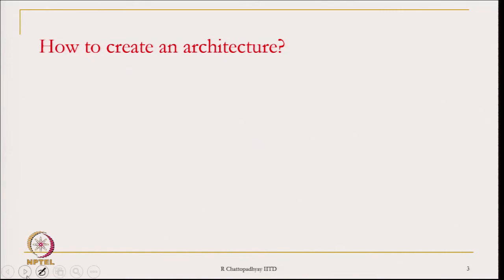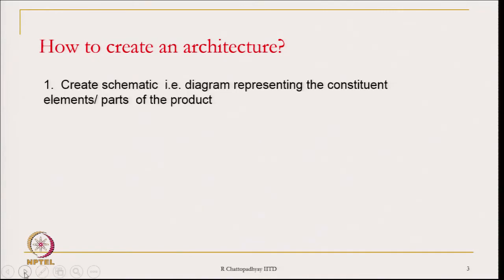How is an architecture created? First, we create a schematic — we create diagrams. It may be line diagrams, it could be freehand sketches, and these diagrams will represent the constituent elements or parts of the product. Some ability to draw diagrams is important. It could be drawn on a computer using graphics software, or it could be drawn by hand.